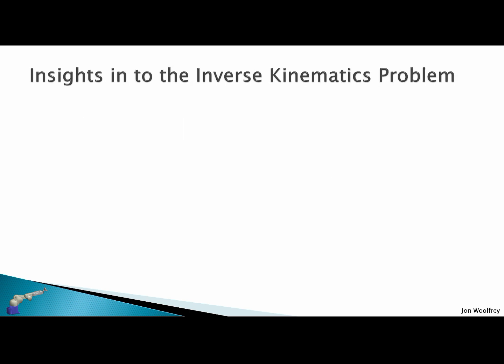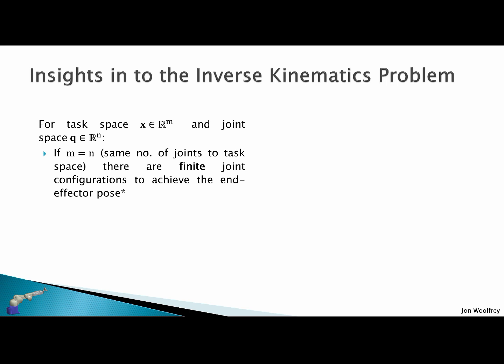Let's look at the insights we've gained from the inverse kinematics problem. For a task space x in a set of real values in m dimensions and joint configuration space q in a set of real values in n dimensions: If m is equal to n, that is we have the same number of joints to task space, there are finite joint configurations to achieve this end effector pose.